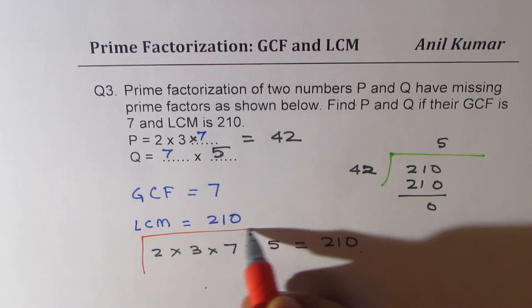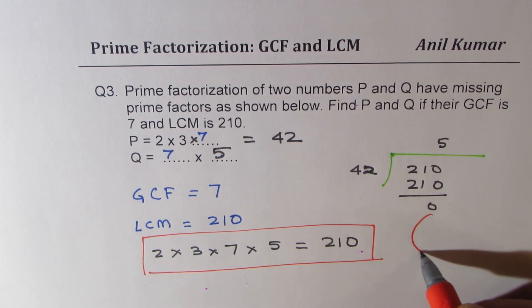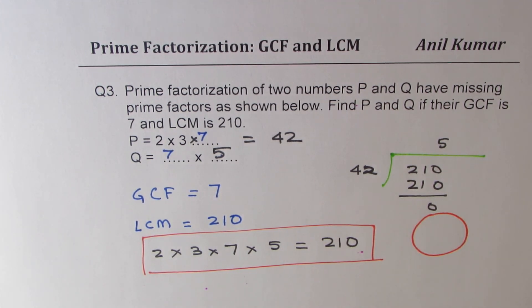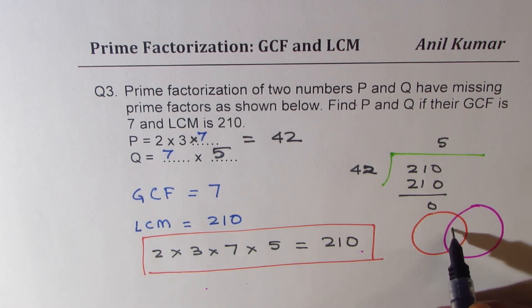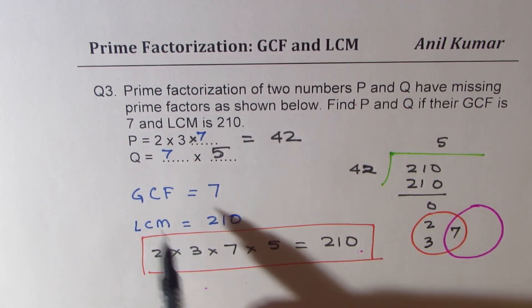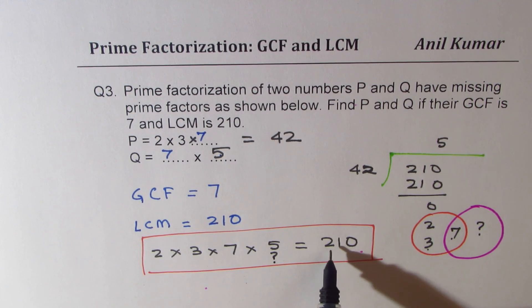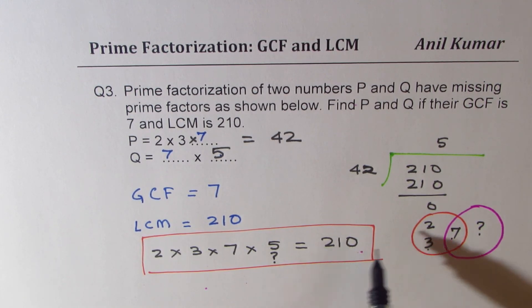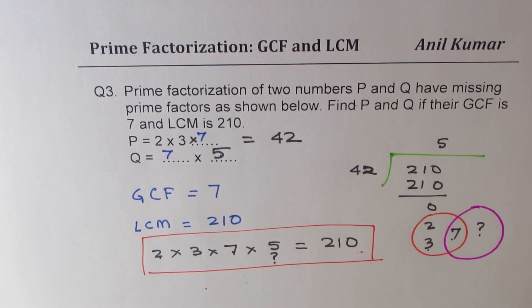You could also use a Venn diagram in this case. Two circles represent prime factors of P and Q. Since 7 is common, it goes in the center. 2 and 3 go in P's region. The missing factor for Q is found by dividing 210 by all other known factors — 2×3×7 — which gives 5. So 5 is placed in Q's region.